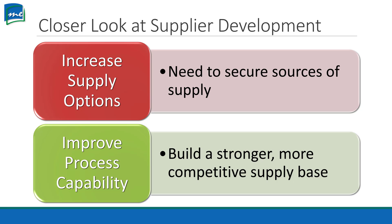We may choose to help that supplier get to the right level. When we do that, we may improve their process capability, which builds a stronger, more competitive supply base. If we're helping one supplier become more competitive, other suppliers will notice and feel the pressure to step up so they can win business over this new entrant to the market.